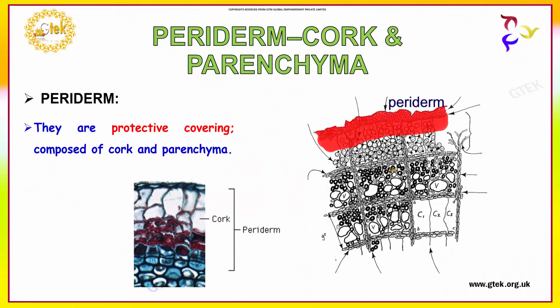Now we are going to see about periderm — that is cork and parenchyma. Periderm is a protective covering composed of cork and parenchyma. Here you can see the periderm — this portion is called periderm, and this portion is cork.